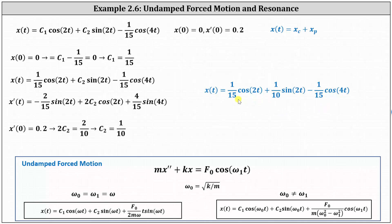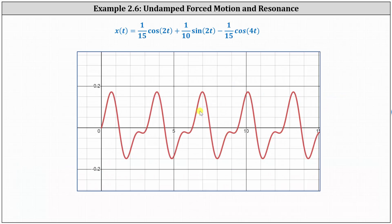Let's look at the graph of x(t). When x(t) is positive, the mass is below the equilibrium position, and when x(t) is negative, the mass is above the equilibrium position. I hope you found this helpful.